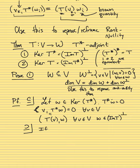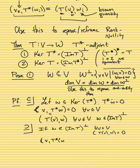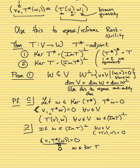The other direction is the same level of difficulty. If w is in the orthogonal complement of Im(T), then for all v in V, the inner product of T(v) with w is zero. By the adjoint formula, this implies the inner product of v with T*(w) is zero for all v in V. Now you just need to show T*(w) = 0. If every other vector has zero inner product with T*(w), it must be zero — in particular you could take v = T*(w), and then the inner product would have to be strictly positive if it were nonzero. So w is in the kernel of T*.